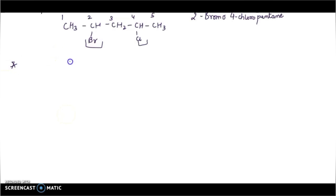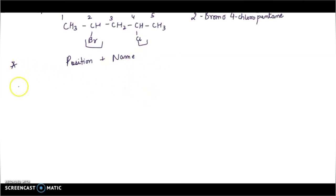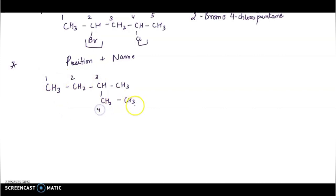The position of alkyl groups or other substituents is indicated by writing the position and the name of the alkyl group just before the name of the parent hydrocarbon. For example: select the longest chain — one, two, three, four, five — there is a methyl group at the third position, so the answer is 3-methylpentane.